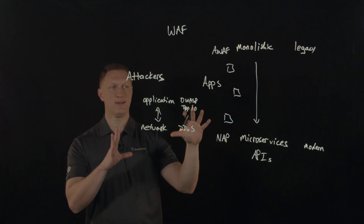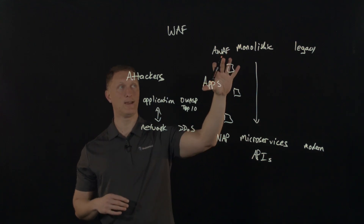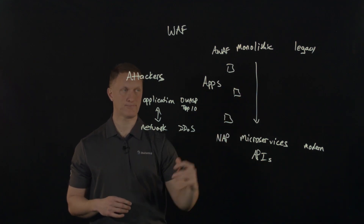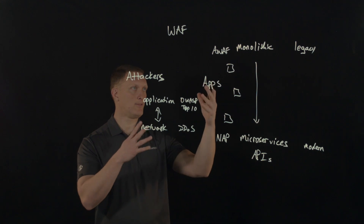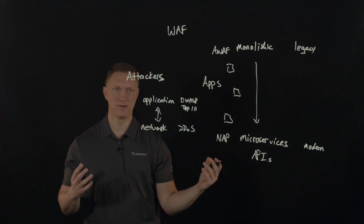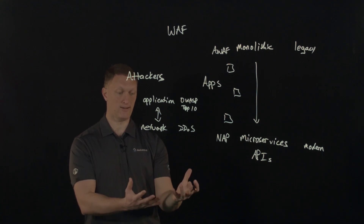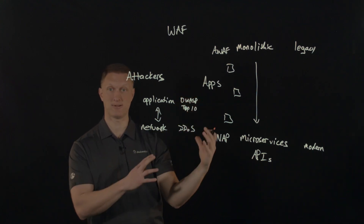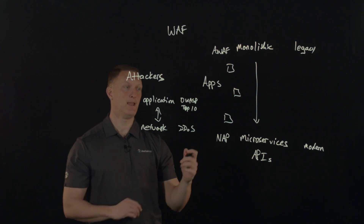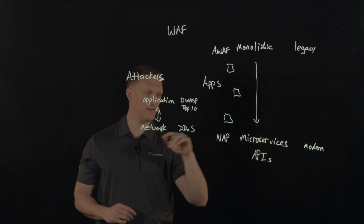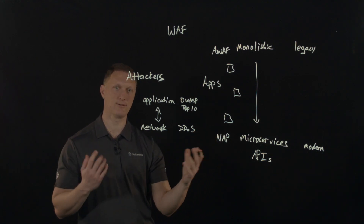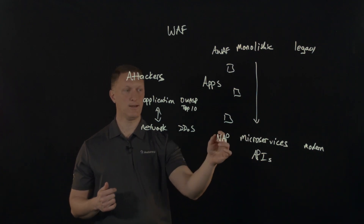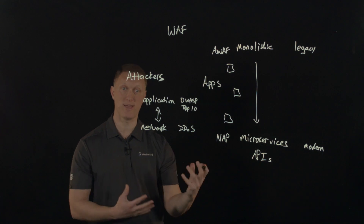If you don't have a web application firewall at all, start by asking: what types of applications do I have, how are they architected, and where are they deployed? If you've got a monolithic legacy application that doesn't change, you can deploy a robust Advanced WAF solution that will protect it extremely well. If you've got microservices-based applications in Kubernetes clusters on the cloud that are changing a thousand times a day, you're going to need a WAF that can change with that very quickly.